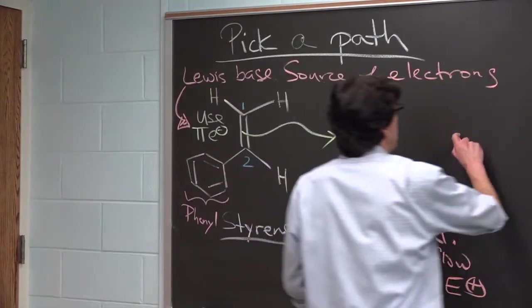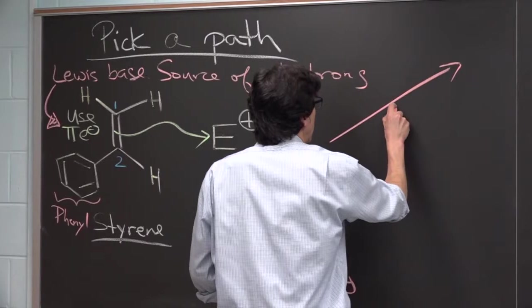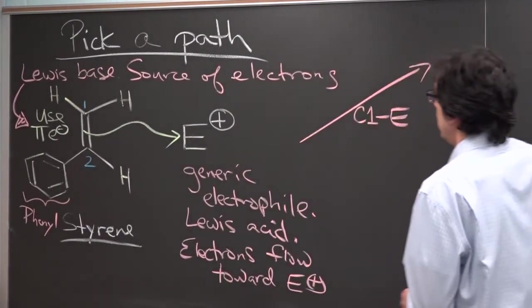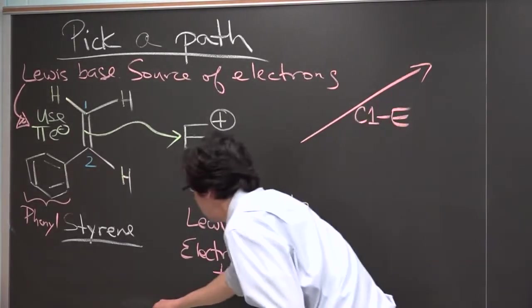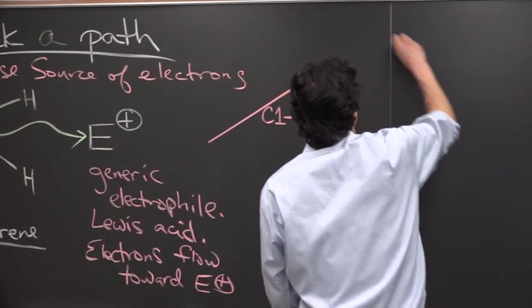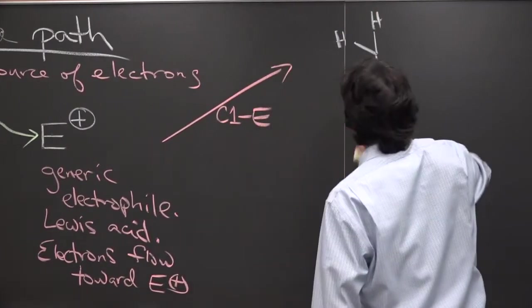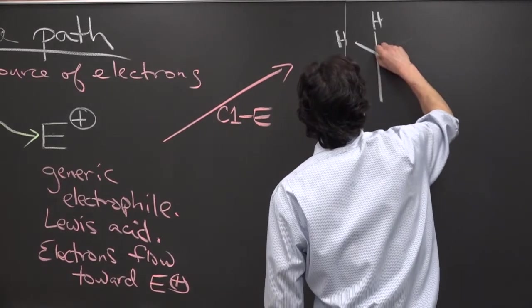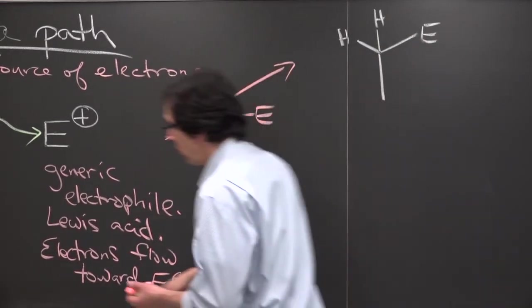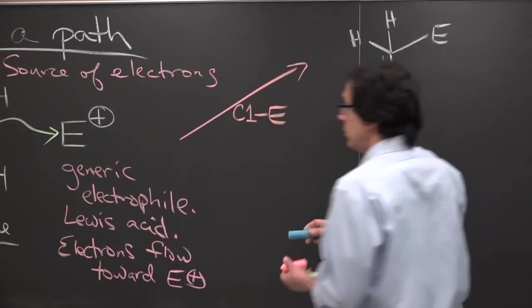Let's use this red pathway here. Carbon 1 bonded to E. If we do that, come over here, carbon 1 is still going to have two hydrogens attached to it. But now, it's also going to be attached to E. Let's number our carbons just to keep track. Here's carbon 1 and here's carbon 2.